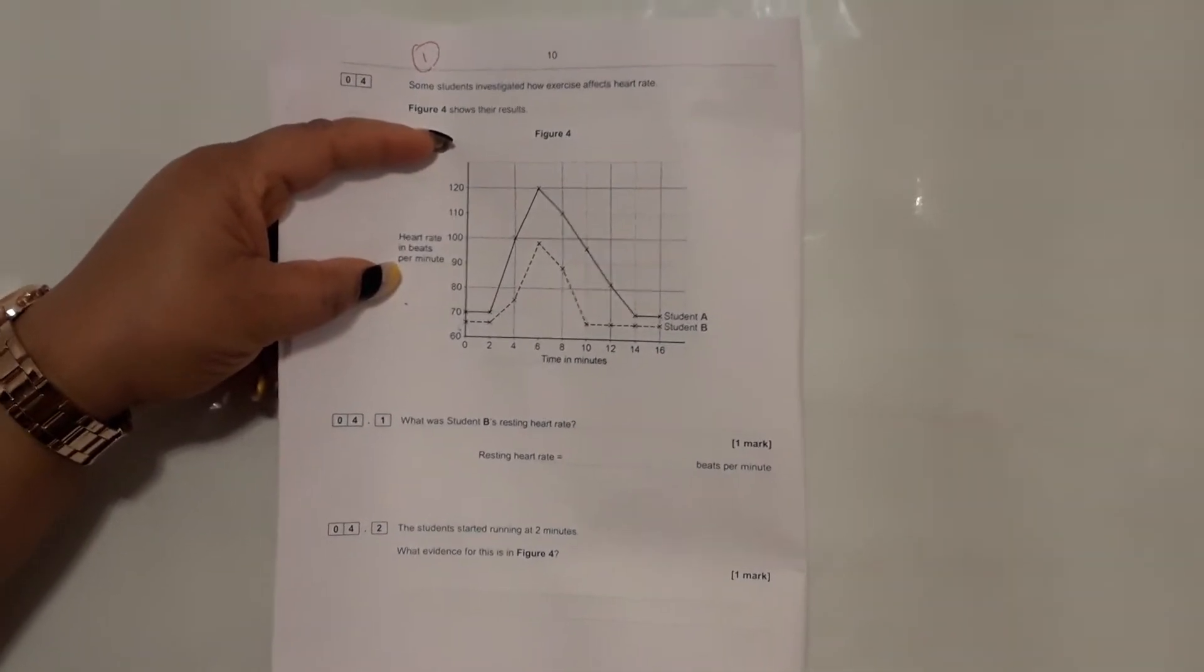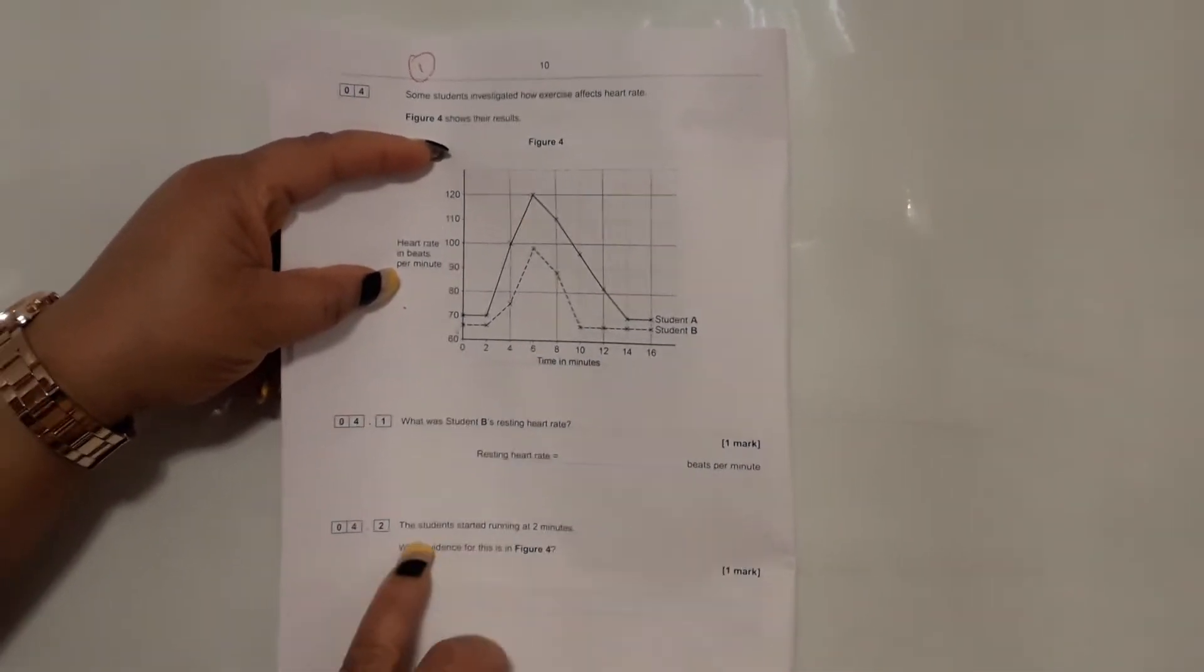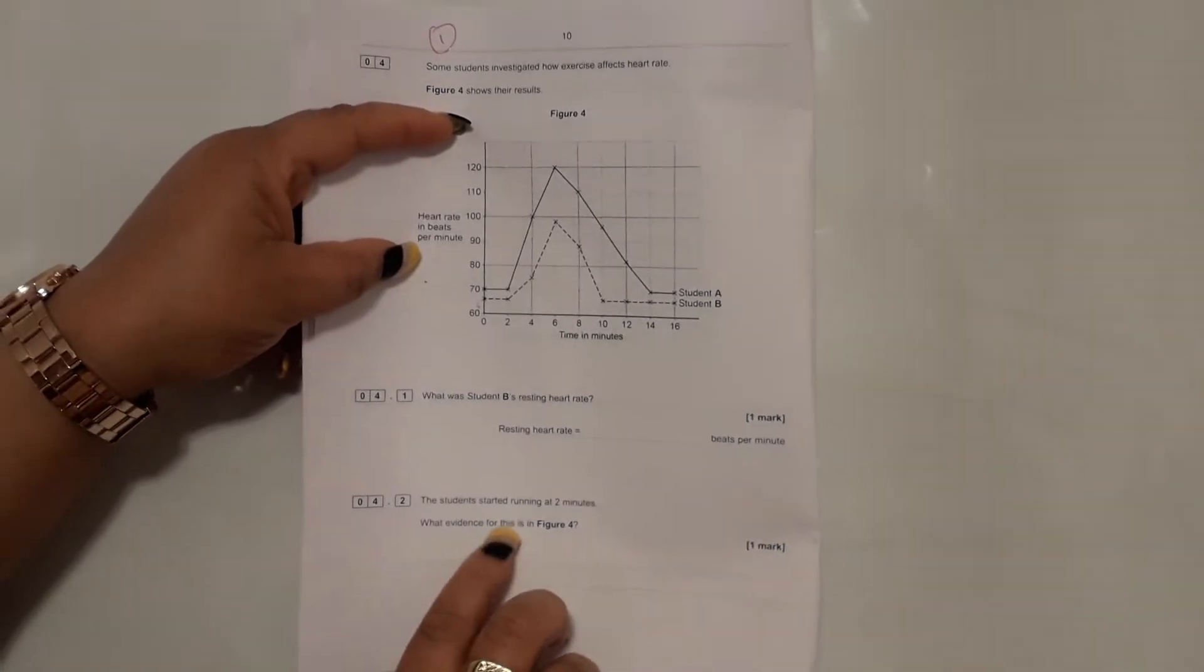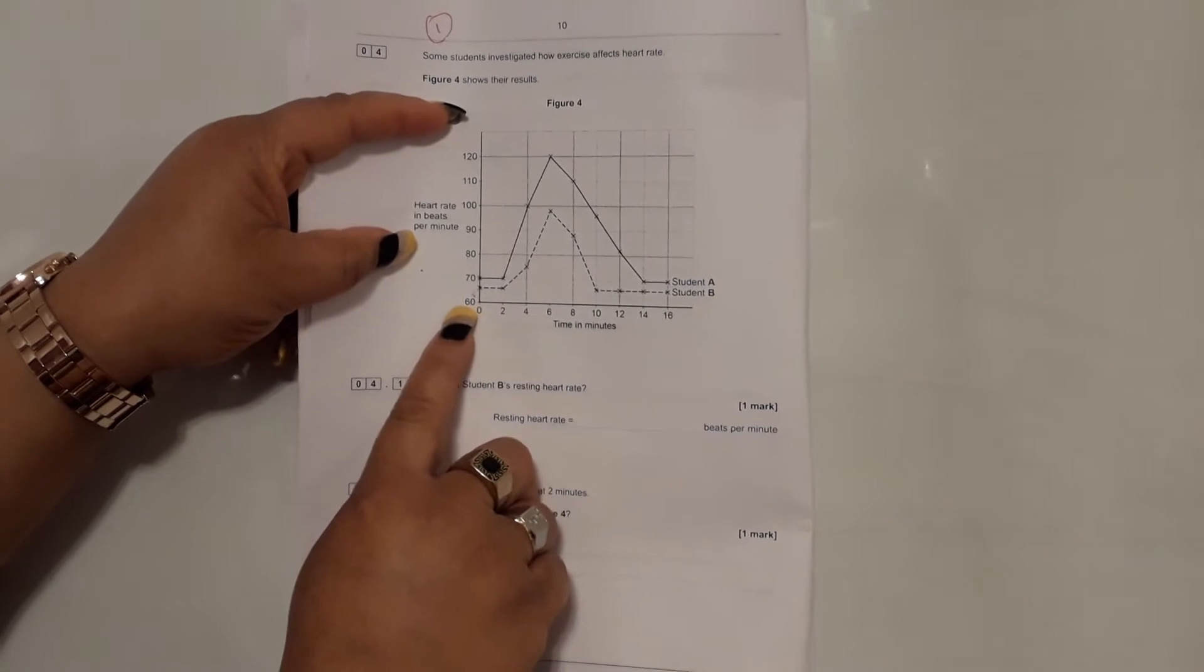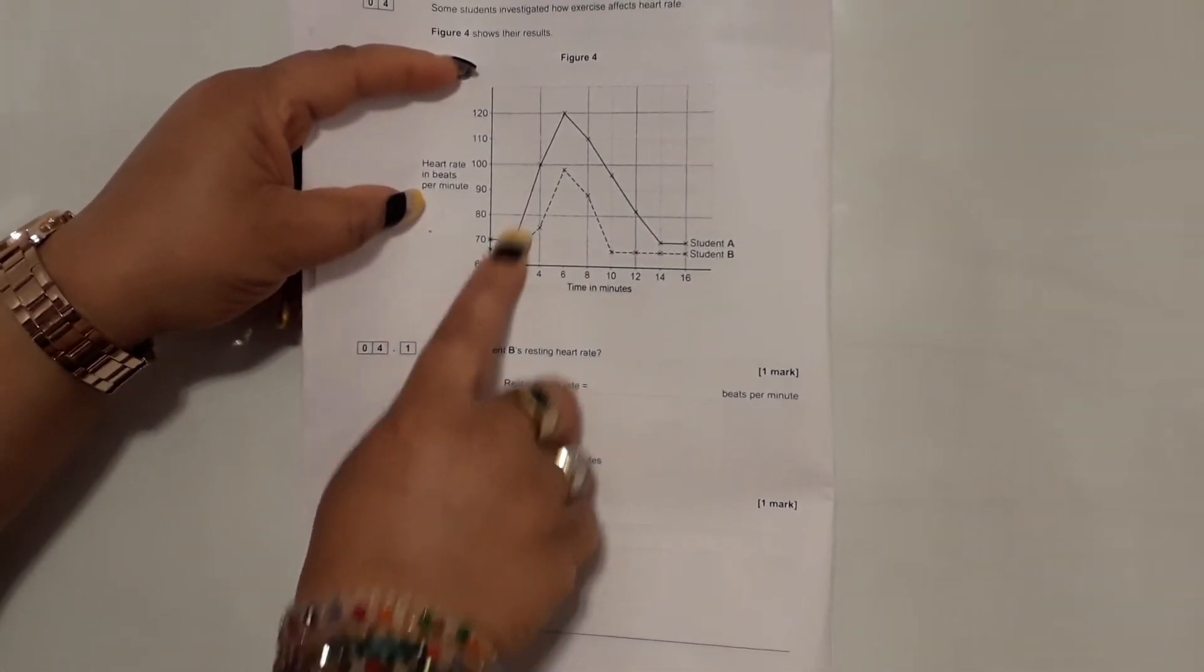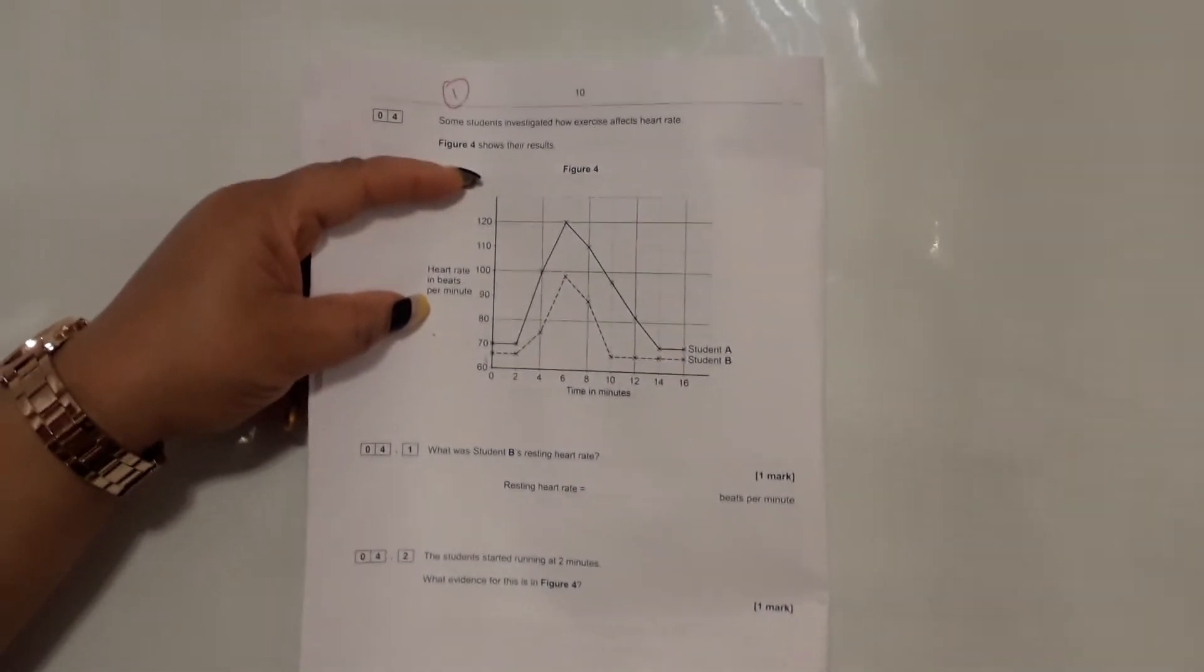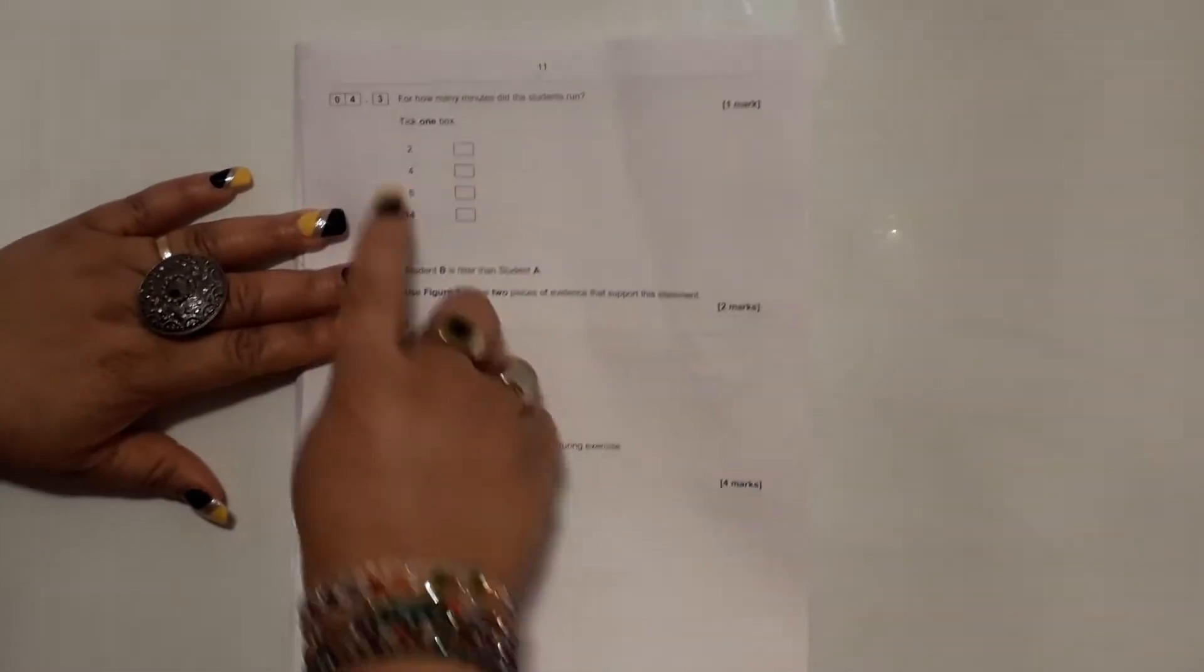The students started running at two minutes. What evidence for this is on figure four? If you look at figure four, it shows that from here to here there was nothing happening, it's a straight line, and then their heart rate suddenly shoots up from two minutes. So that's your evidence. The heart rate increases at two minutes, so they started running at two minutes.